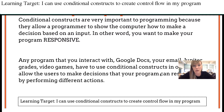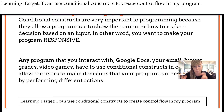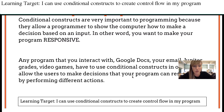It's super important to be able to do this because it allows a computer to make a decision based on a user input — in other words, it makes your program responsive. If you're a programmer writing a program, you want people to be able to play it if it's a game, edit documents, or view different versions of a website. Google Docs, email, Jupyter, grades, and especially video games all have conditional constructs to allow users to make decisions that your program can respond to by performing different actions.